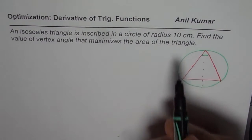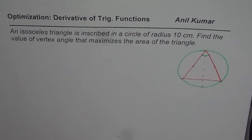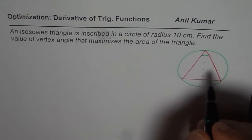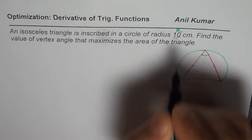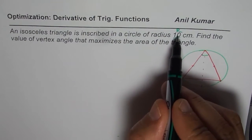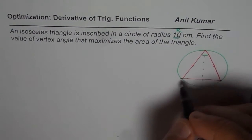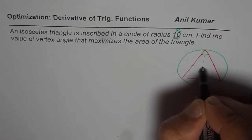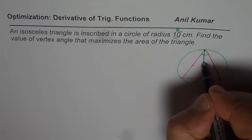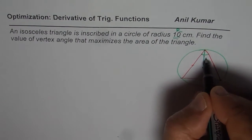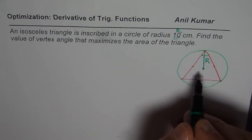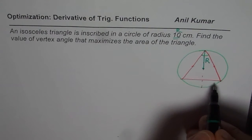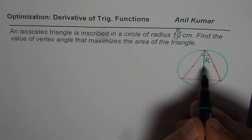This is a complicated question, so I'll prefer to use a general value for the solution so it can be applied to related questions. We'll work with radius r instead of 10. At the end you can substitute r with 10 and write down the solution. So we need to find the maximum area of the inscribed isosceles triangle within a circle of radius r.